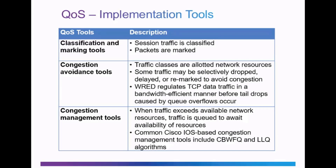Under classification and marking tools, session traffic is classified into different priority groupings and packets are marked. Under congestion avoidance tools, traffic classes are allotted network resources. Some traffic may be selectively dropped, delayed, or remarked to avoid congestion. Weighted Random Early Detection regulates TCP data traffic in a bandwidth-efficient manner before tail drops caused by queue overflows, basically congestion, occurs.